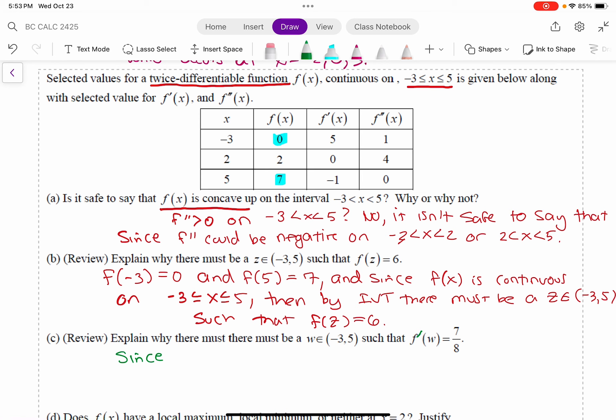So I'm going to say, since f of x is continuous on the interval negative 3 to 5 and differentiable. I mean, it says it's differentiable on the closed interval, but the mean value theorem doesn't really require that.